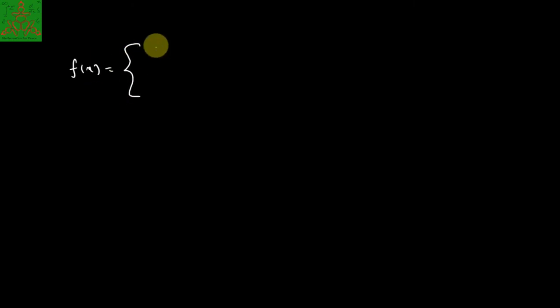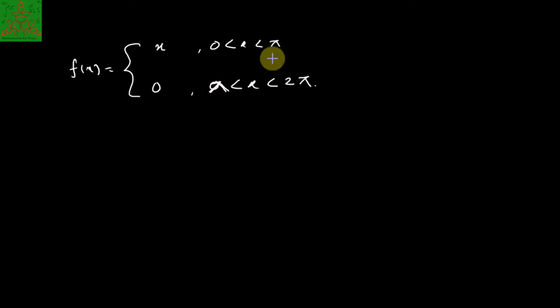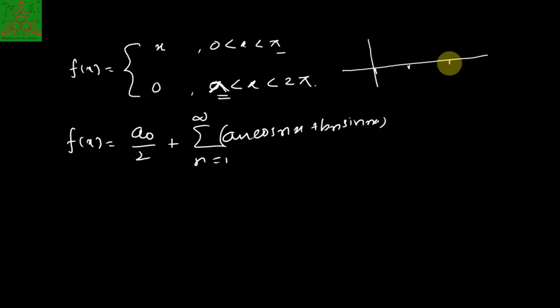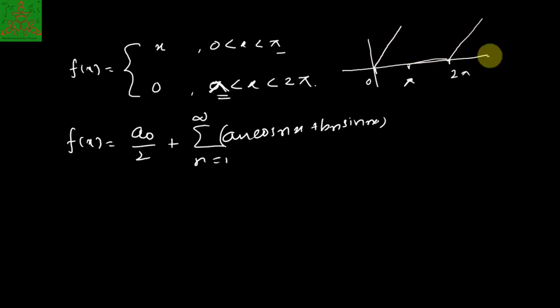Let us solve one or two examples to understand this deeply. Consider the function f(x) = x if x is between 0 to π, and 0 if x is between π to 2π. This function has a discontinuity at the point π. The Fourier series can be written as a₀/2 plus summation from n=1 to infinity of aₙ cos(nx) plus bₙ sin(nx). The graph of the function goes linearly from 0 to π, then is zero from π to 2π.